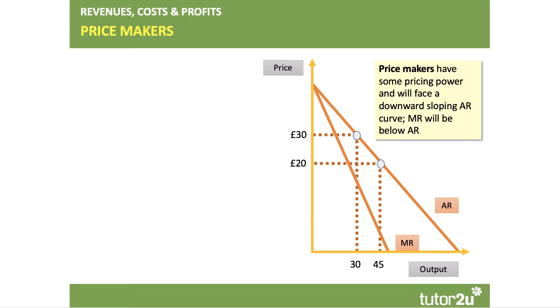The marginal revenue curve has a gradient of twice the average revenue curve, so MR will cut the x-axis halfway from where AR cuts the x-axis, as shown here. Price makers have some pricing power but face a downward sloping average revenue curve, and MR will be below average revenue — so to cut the price from 30 to 20 to sell 15 extra units, revenue implications must be carefully considered.